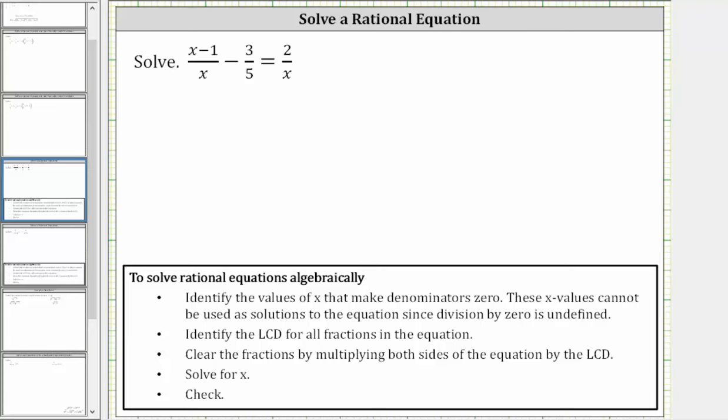We want to solve the given rational equation. The first step is to identify the values of the variable, or in this case x, that make the denominators zero. These x values cannot be used as solutions to the equation since division by zero is undefined.